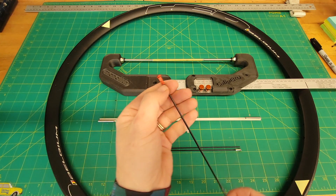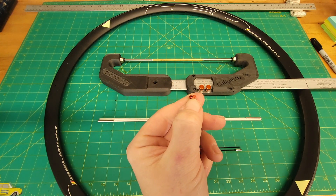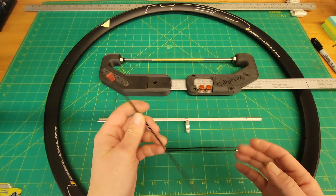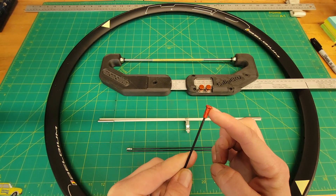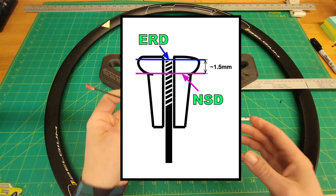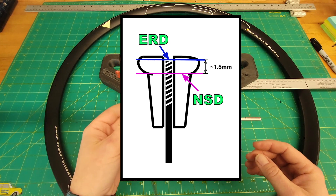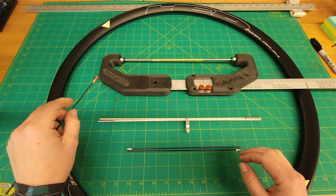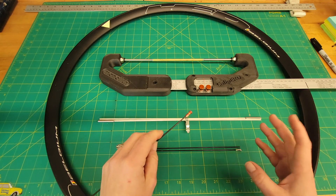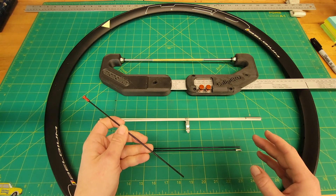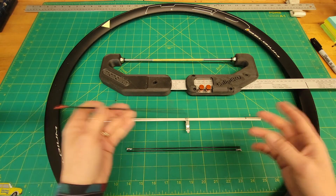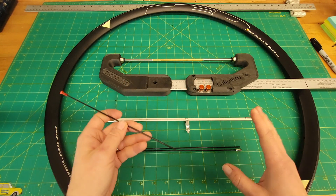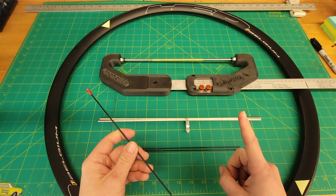The nipple seat diameter accounts for the thickness of the rim, but it is not the ERD. The ERD actually accounts for a small amount of the spoke that is in the head of the spoke nipple. With a normal DT Swiss style spoke nipple, it's about a millimeter and a half on each side. So when you measure for ERD, you're more likely calculating it from an NSD measurement, which trips people up.